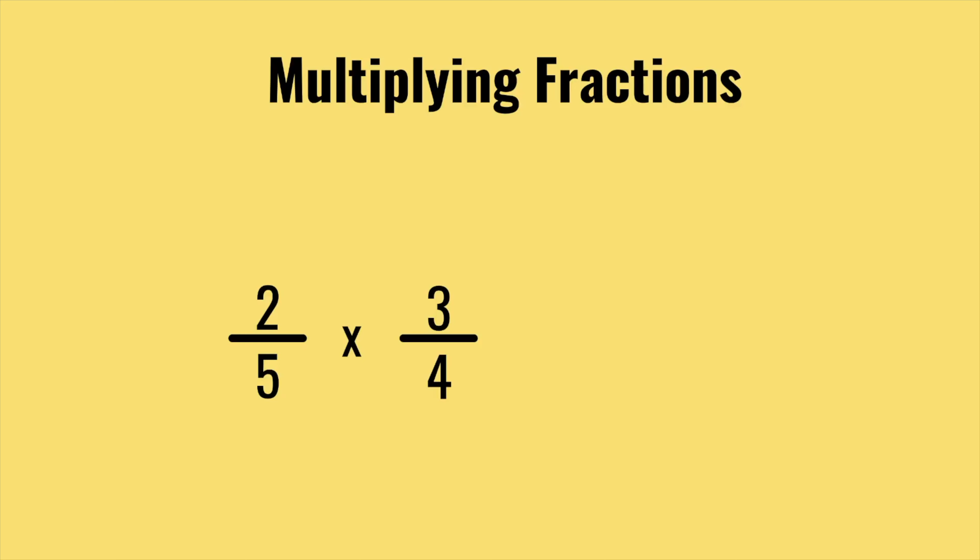Let's start with multiplying fractions. So how do we actually multiply two fractions? Well it's really straightforward. All we have to do is multiply the two numerators and the two denominators together. So two times by three gets us six and five times by four gets us 20. So we have six over 20.